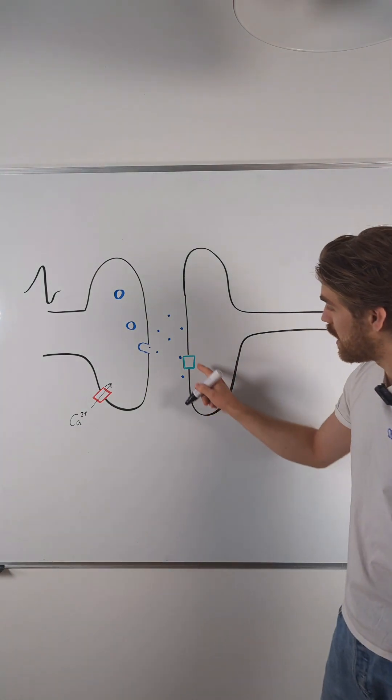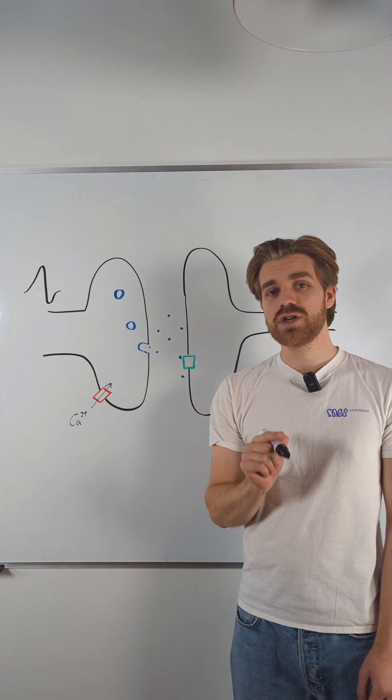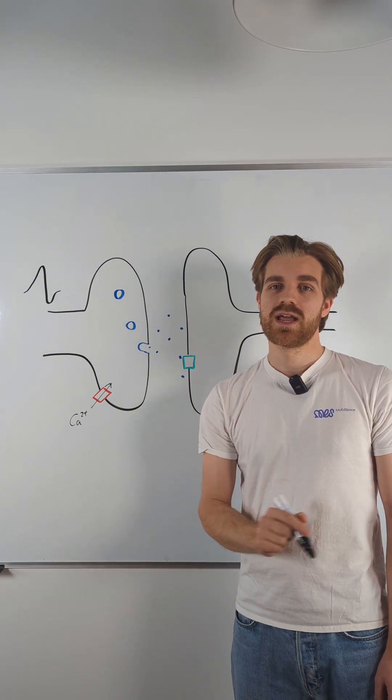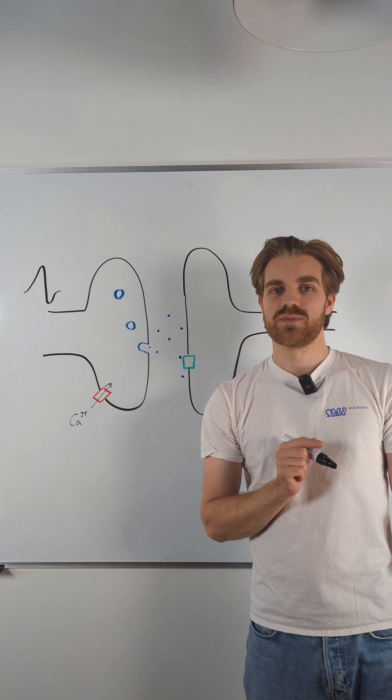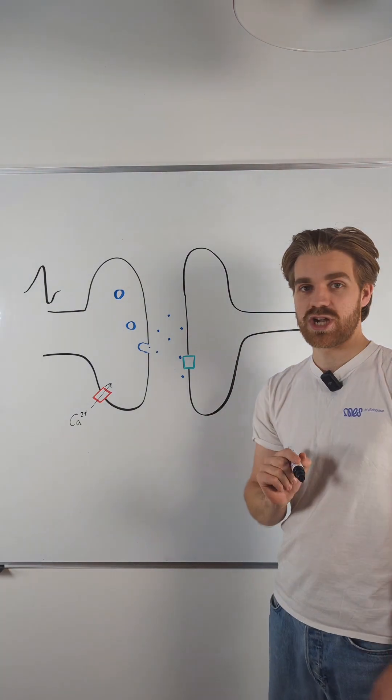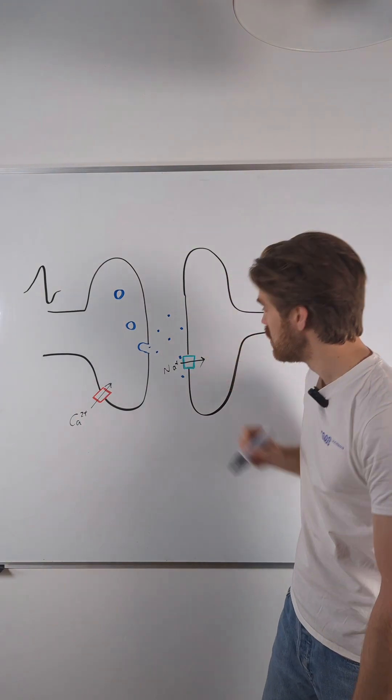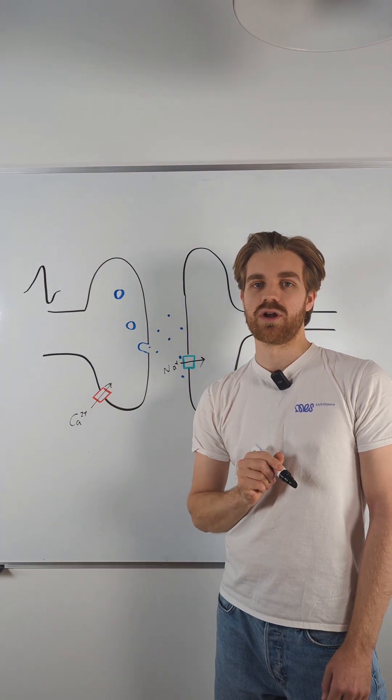These then bind to the sodium channels on the postsynaptic membrane. Now when they bind to those sodium channels, this opens the sodium channel and now the sodium ions diffuse into that postsynaptic neuron.